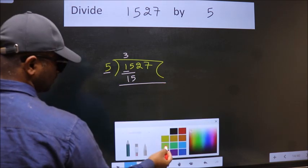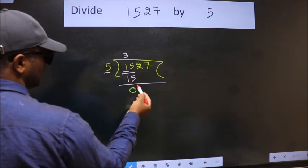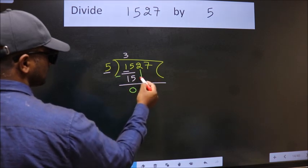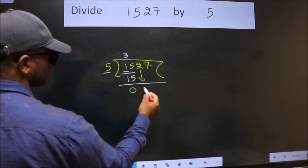Now we should subtract. We get 0. After this, bring down the beside number. So 2 down.